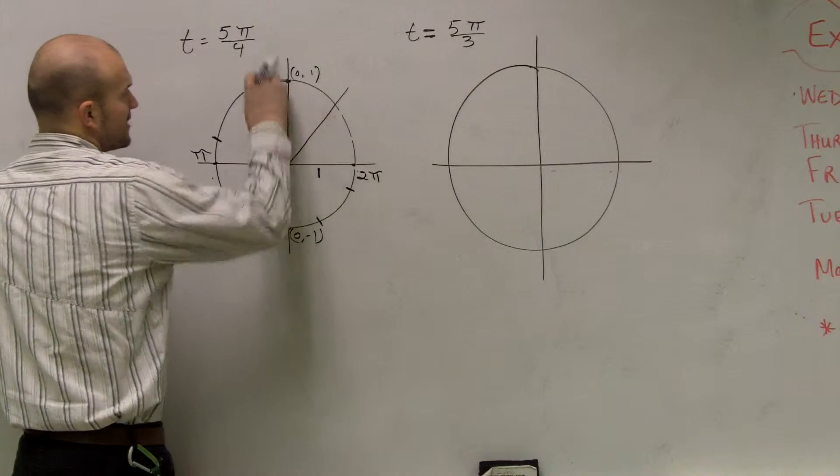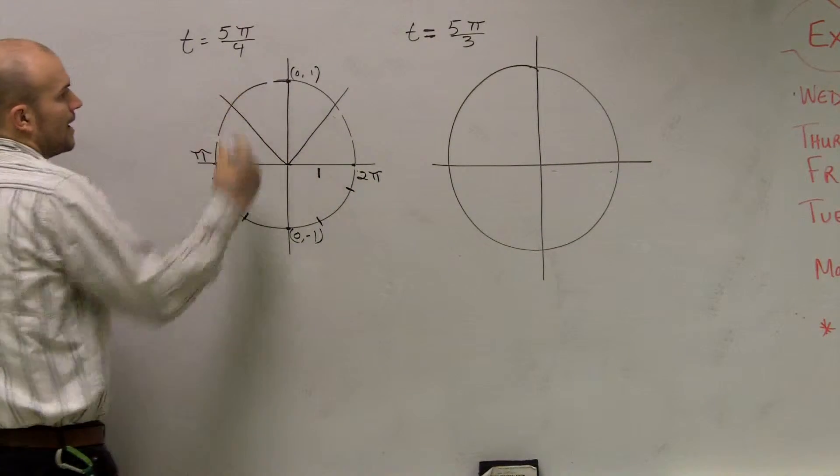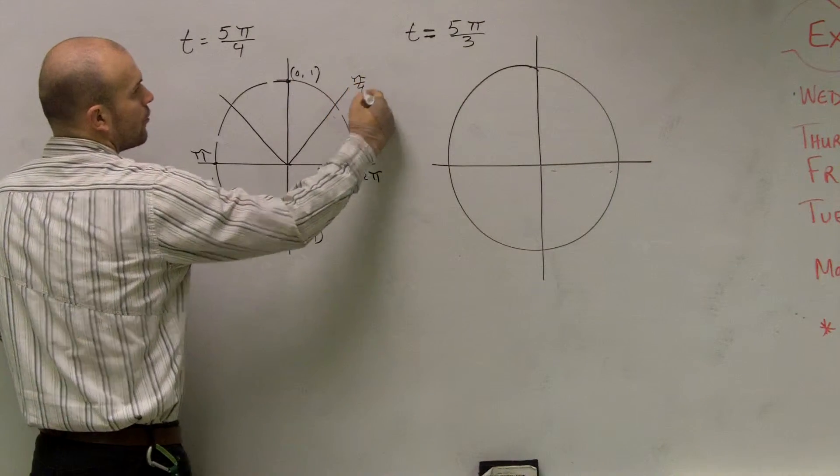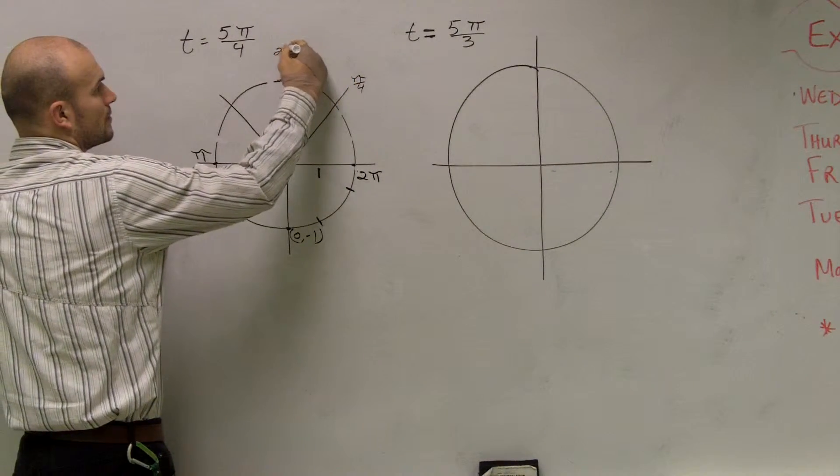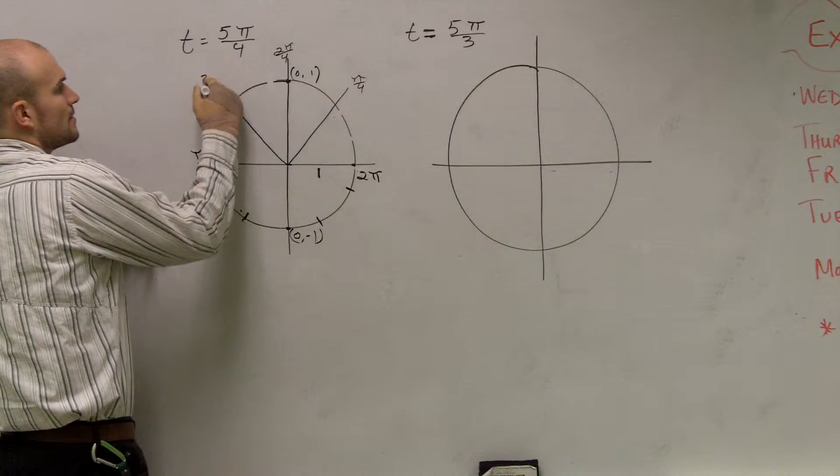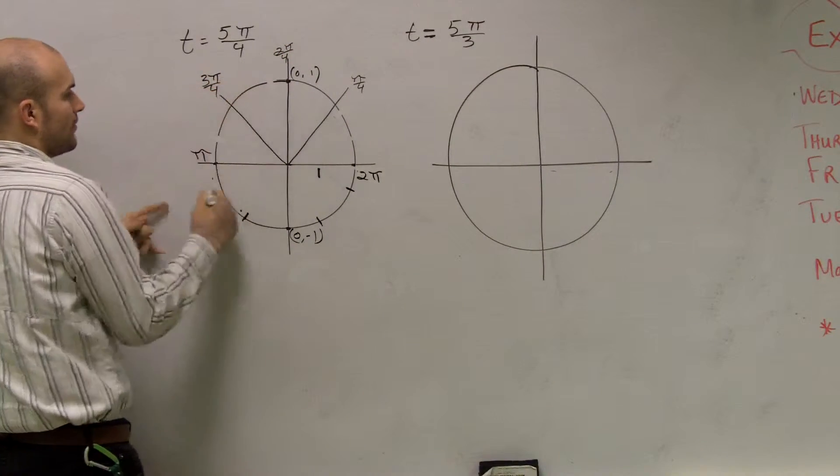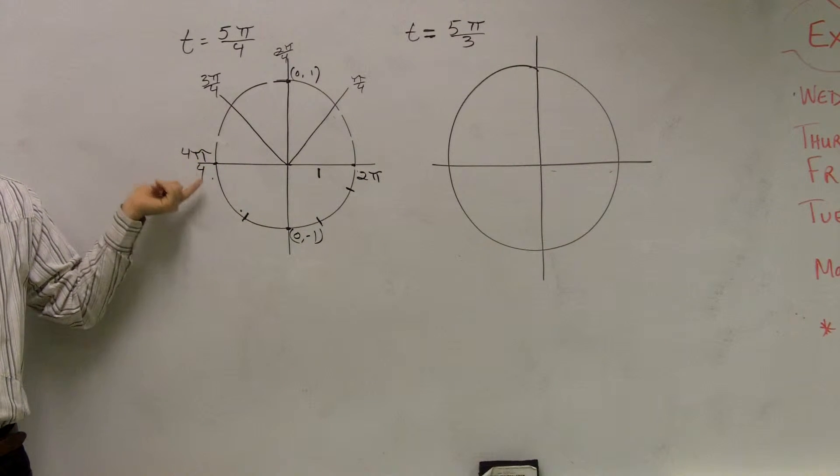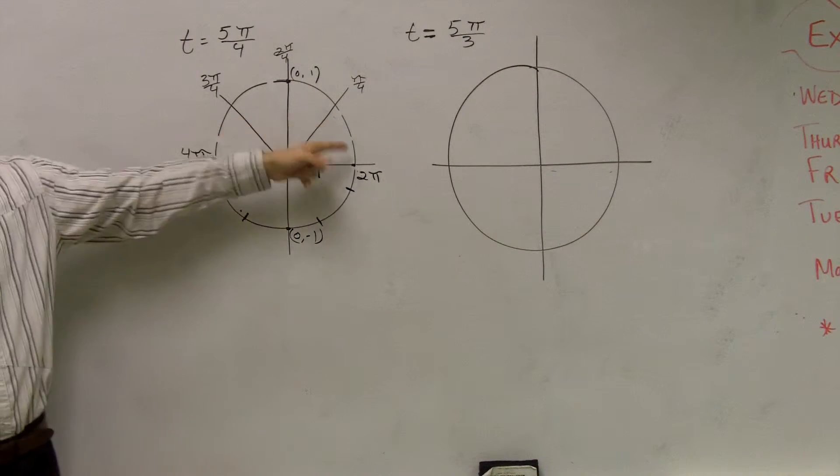So if I break it up into fourths, let's kind of forget about the radian measure. That was just a talking point. I could break it up into fourths. So now this would be 1 fourth, 2 fourths, 3 fourths, and 4 fourths. 4 divided by 4 would still give you π, but you can write it like that. Does everybody see what I did?